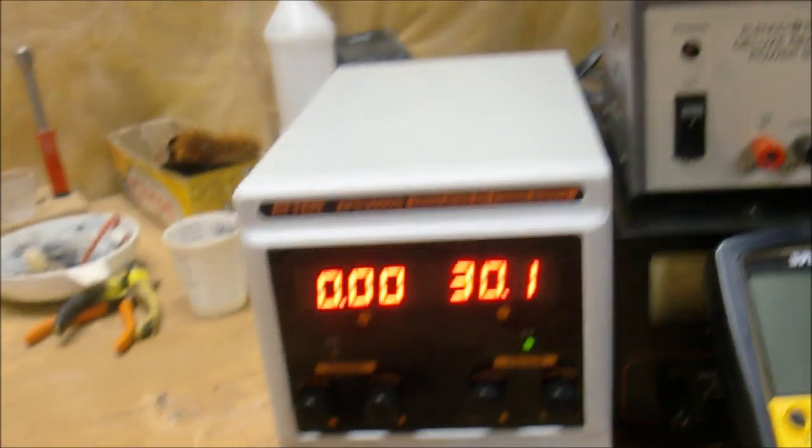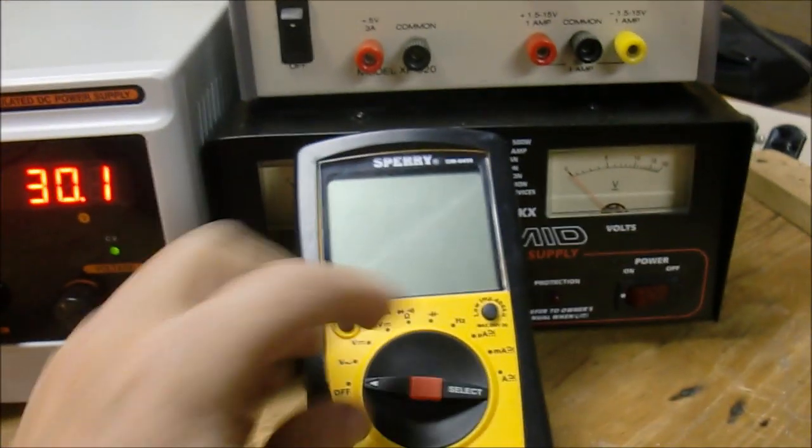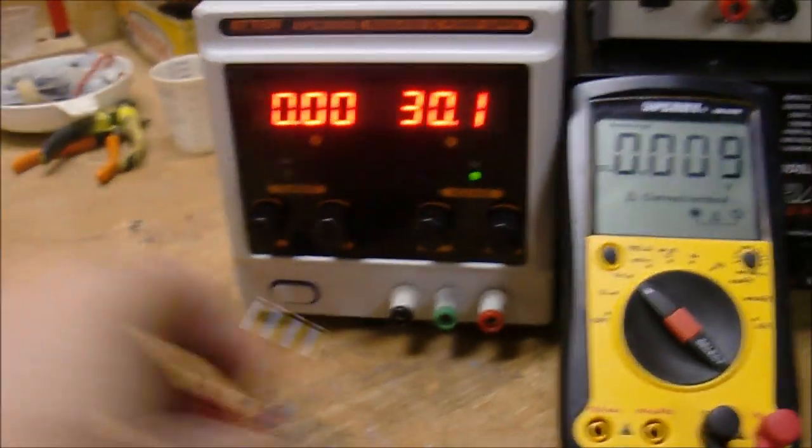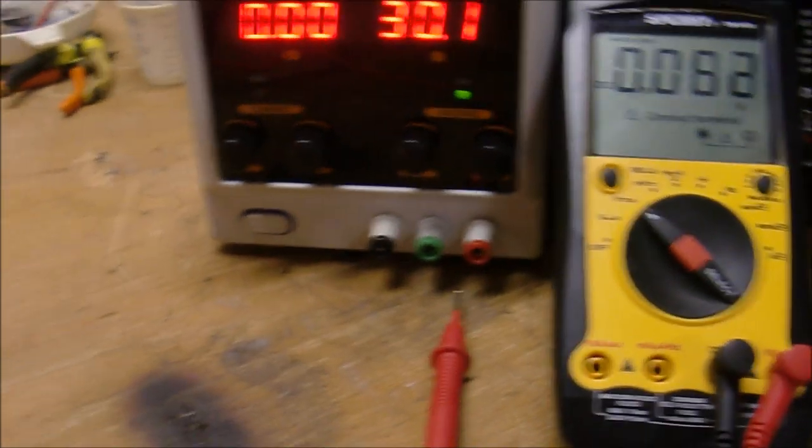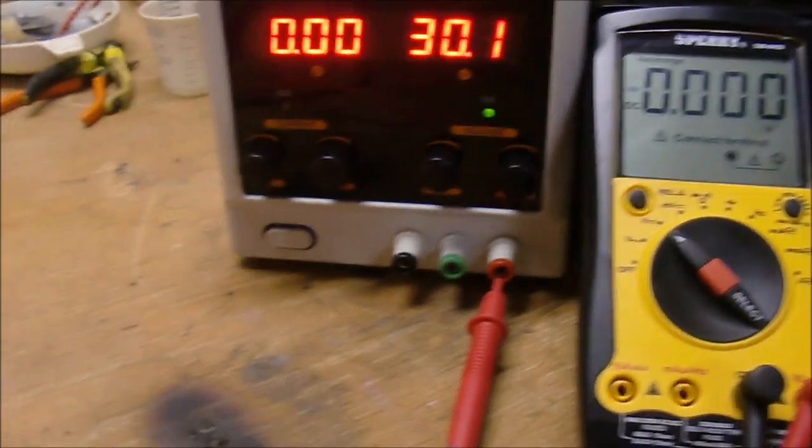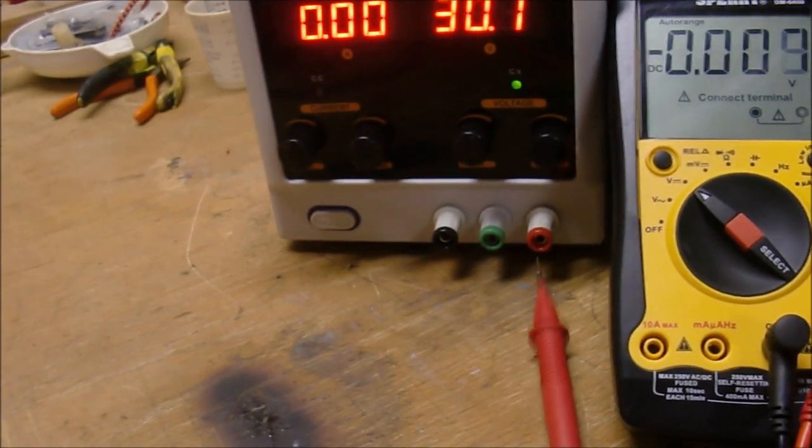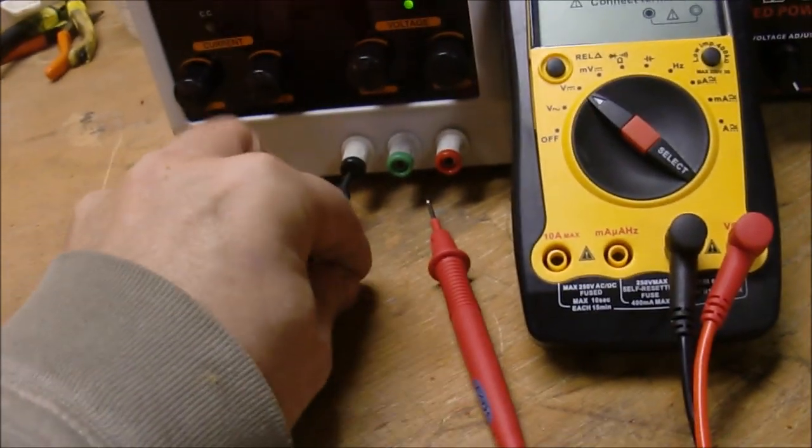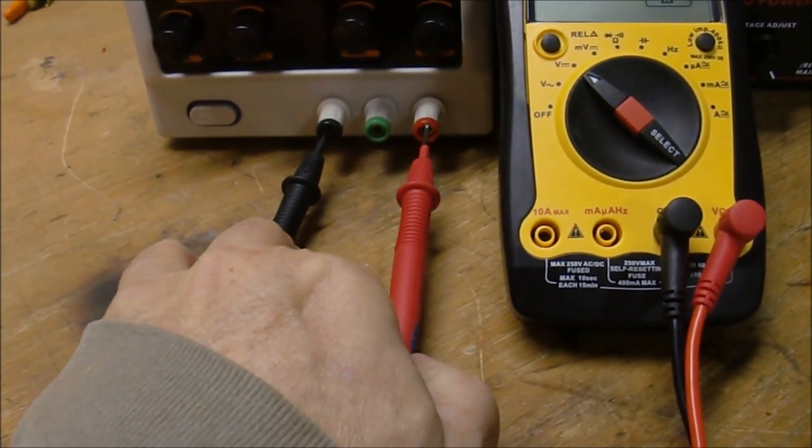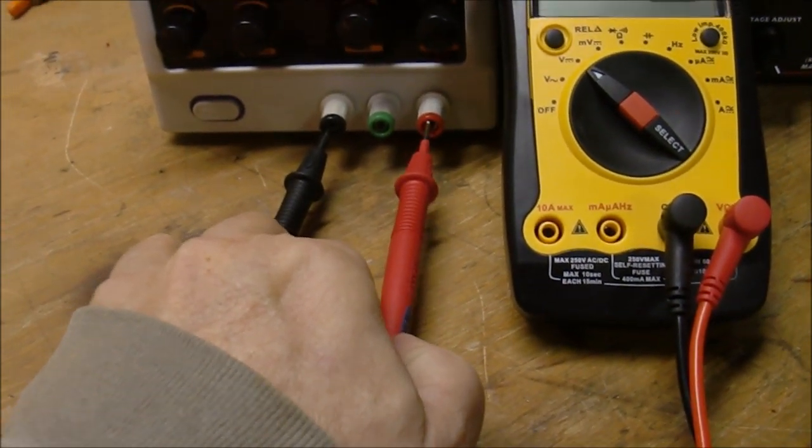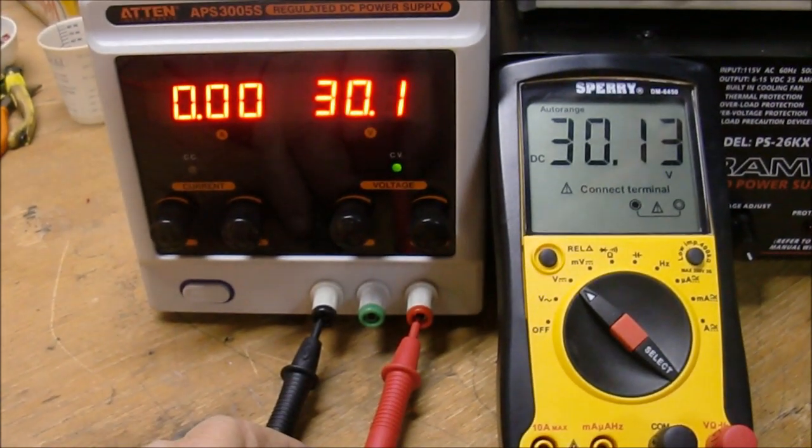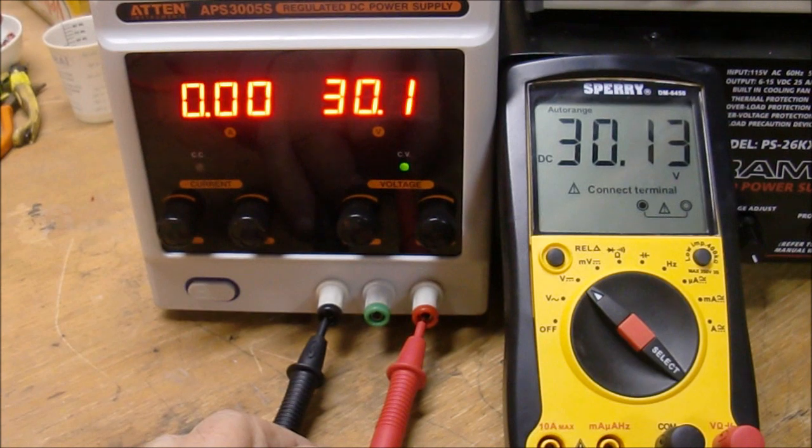Now I'm going to connect up my voltmeter, put it on DC volts. Not the easiest thing to do with one hand here, but see how close these are. Alright, you can see 30.1, 30.1.